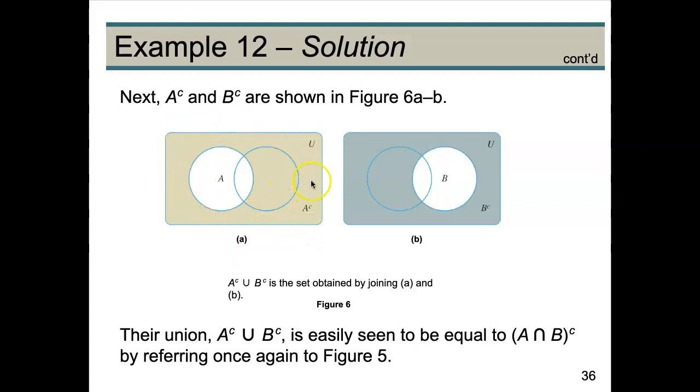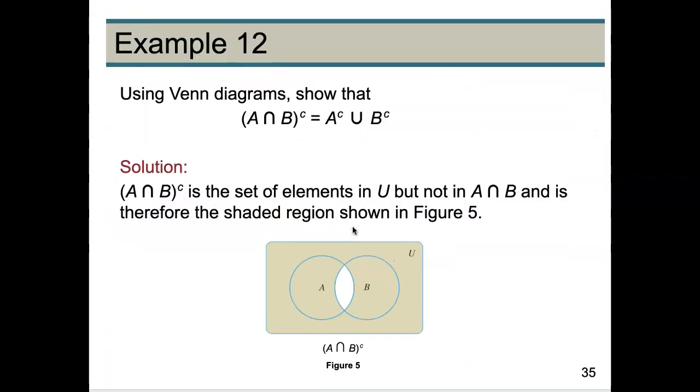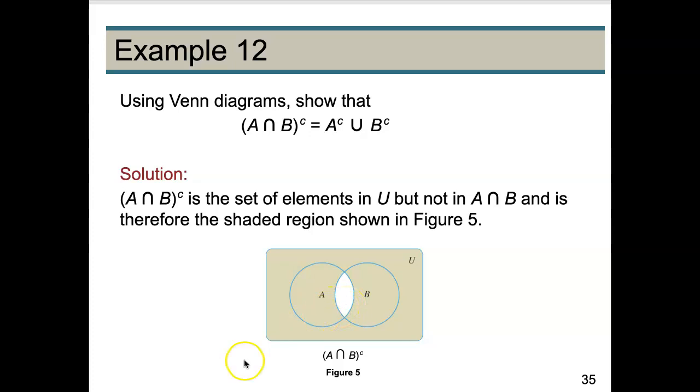Okay, and now let's examine A^c. So the shaded area is A^c, it's everything that isn't A. And similarly, B^c, the shaded area is everything that isn't B. So picture putting these diagrams on top of each other, and that's going to be the union.